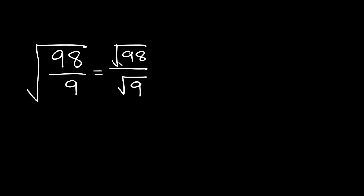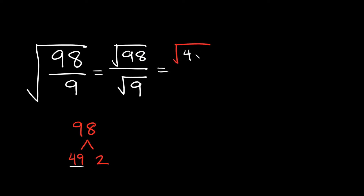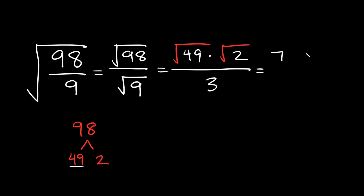On top we have the square root of 98, which is not a perfect square, so we break it down into factors. 98 we can break down into 49 times 2, and I specifically want to use those numbers because 49 is a perfect square. So the top becomes the square root of 49 times the square root of 2, over the square root of 9 on the bottom, which equals 3. The square root of 49 is 7, so your final simplified answer is 7 root 2 over 3.